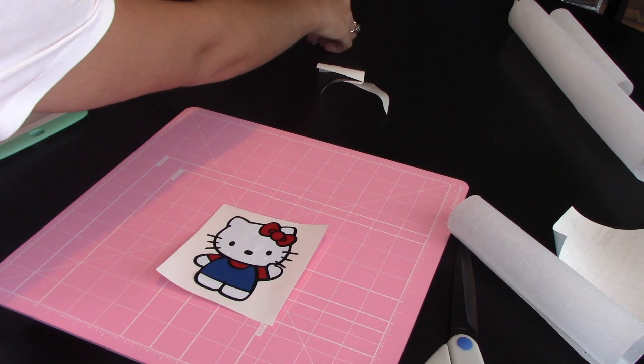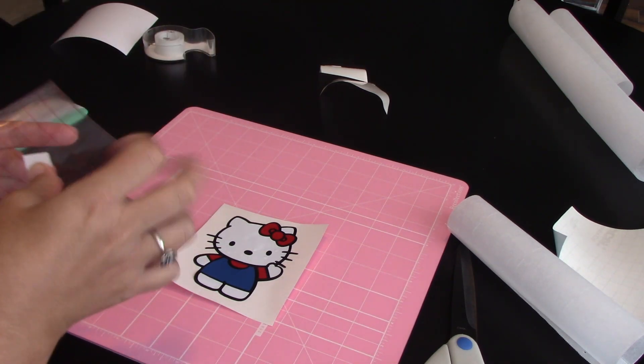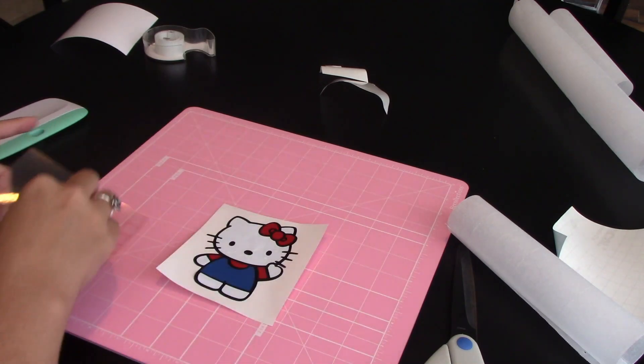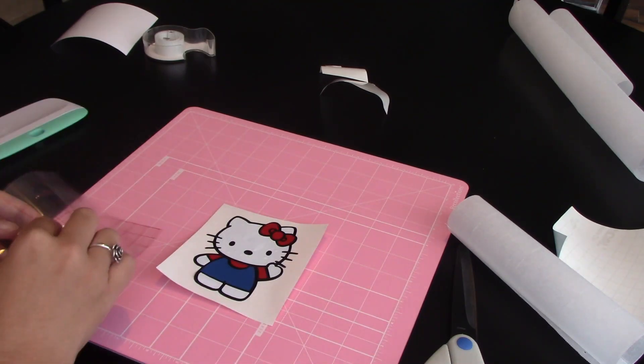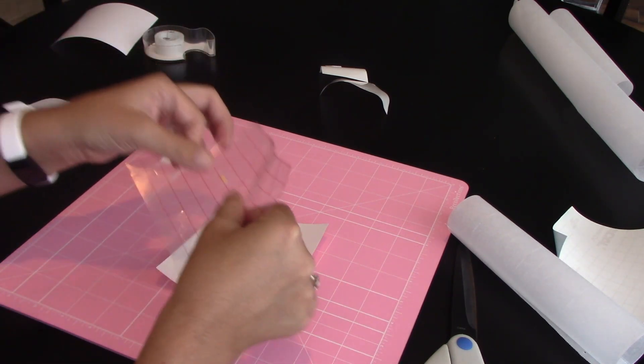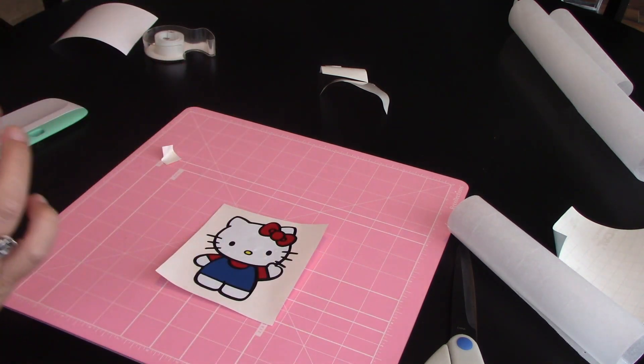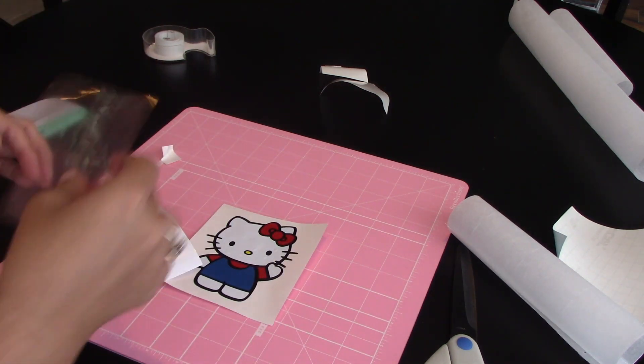All I have left is the nose. The little tiny nose. I don't think I'm going to need to do the parchment paper trick for the nose. I think I'm just going to stick it down. And Hello Kitty is done.